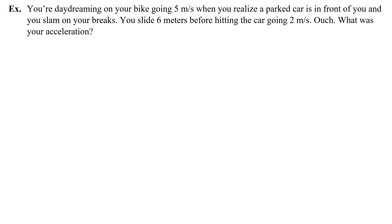You're daydreaming on your bike going 5 meters a second when you realize a parked car is in front of you and slam on your brakes. You slide 6 meters before hitting the car at 2 meters a second. What was your acceleration? Initial velocity is 5 meters a second, final velocity is 2 meters a second, and displacement is 6 meters.